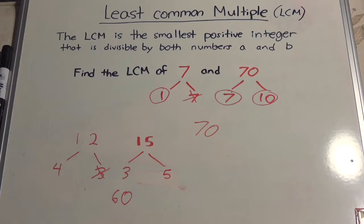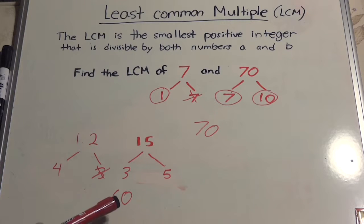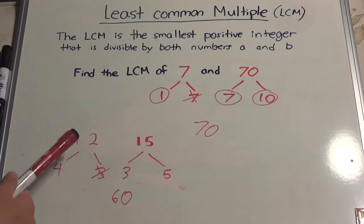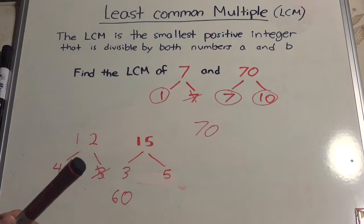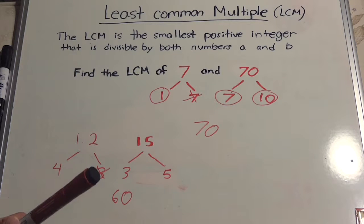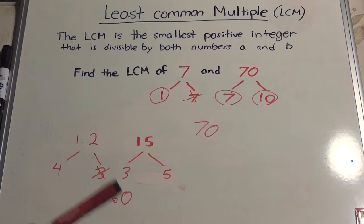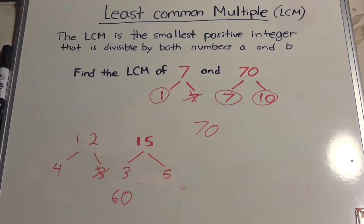60 is the least common multiple because if you do 60 divided by 12 you get 5, and 60 divided by 15 you get 4.